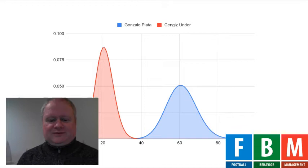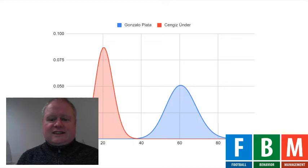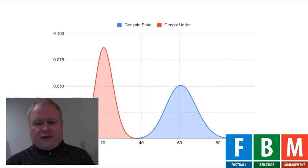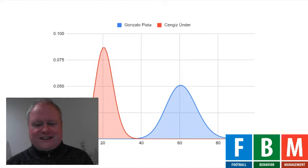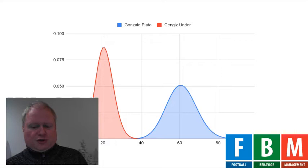If you look at these two players — Cengiz Under has been hired this season and is not doing very well, and Gonzalo Plata, rumored to be of interest to Leicester. This is the data for Under based on the previous season when he was still playing elsewhere, and this is Plata in the current season. You can obviously see that it is much better to hire Plata than Under. The probability axis shows the number of FBM score points that the player can get — the higher the better. Plata has a much better distribution of probabilities than Under.